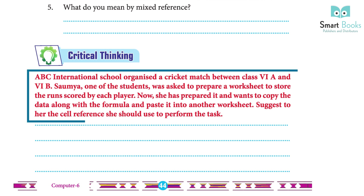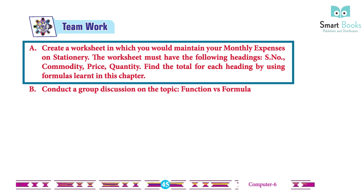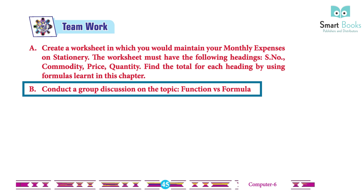Critical thinking: ABC International School organized a cricket match between class 6A and 6B. A student named Tomya was asked to prepare a worksheet to store the runs scored by each player. She wants to copy the data along with the formula and paste it into another worksheet. Students should suggest the appropriate cell reference to use. Team Works activity: create a worksheet to maintain monthly expenses on stationery with headings — serial number, commodity, price, and quantity — and find the total using formulas. Also conduct a group discussion on the topic: Function vs Formula.